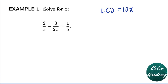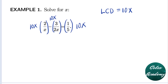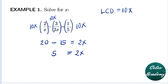Now that we know the LCD is 10x, we need to multiply each part of the equation by 10x. So the first fraction is multiplied by 10x, the second by 10x, and the third by 10x. Simplifying: 10x times 2 is 20x divided by x, giving 20. Minus 10x times 3 is 30x divided by 2x, giving 15. Equals 10x times 1 divided by 5, giving 2x. So we have 20 minus 15 equals 2x, which simplifies to 5 equals 2x.